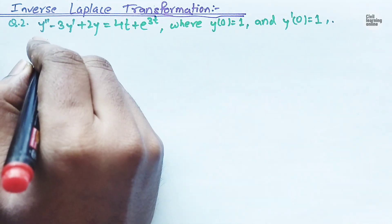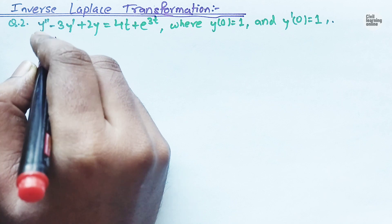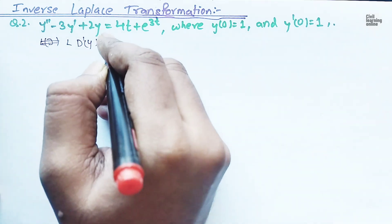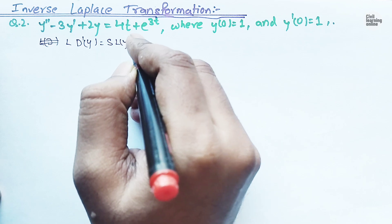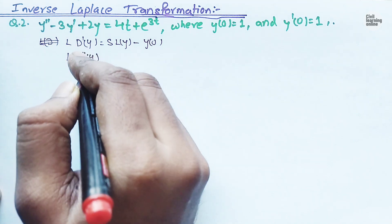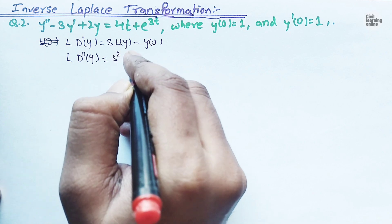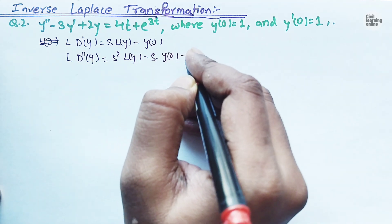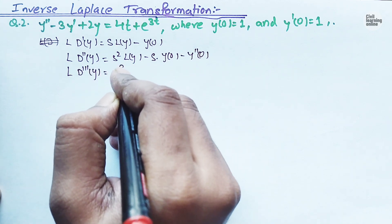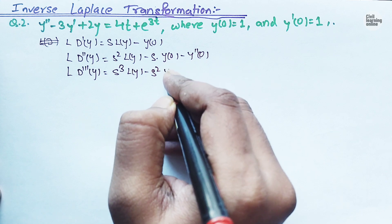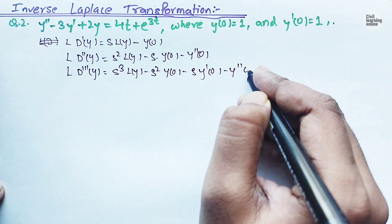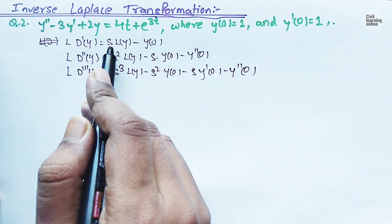In the previous lecture I discussed that the Laplace transformation of y' equals s times L{y} minus y(0). Similarly, Laplace transformation of y'' equals s² L{y} minus s·y(0) minus y'(0). Similarly, Laplace transformation of y''' equals s³ L{y} minus s²·y(0) minus s·y'(0) minus y''(0).